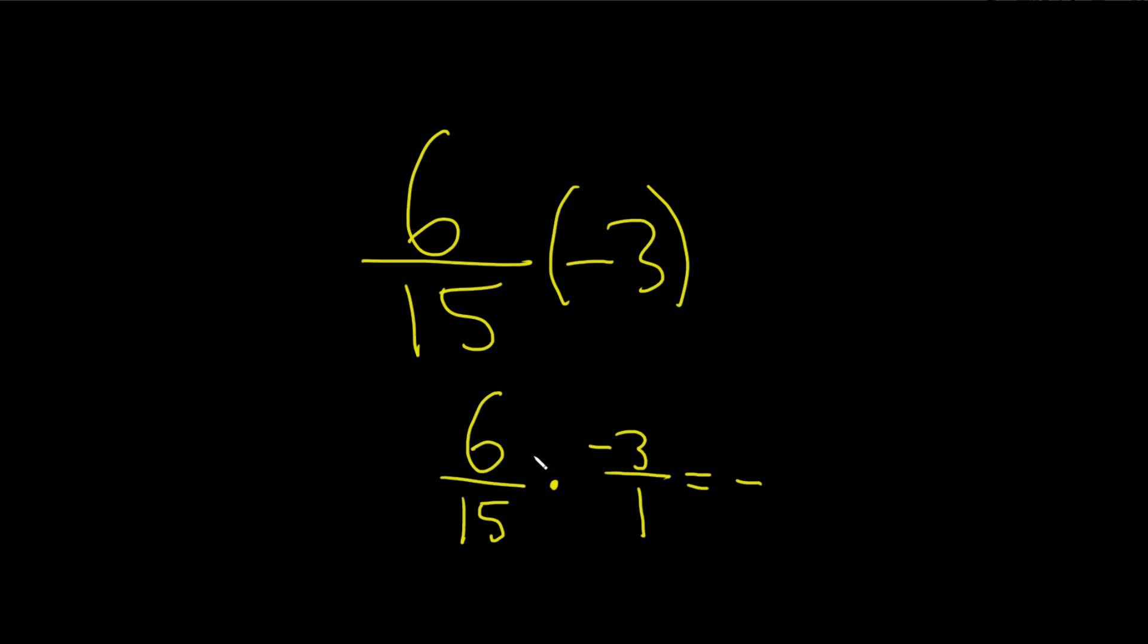And now we can cancel. Remember that numbers on the top can cancel with numbers on the bottom. So we can reduce the 6 and the 15 or we can reduce the 3 and the 15. Let's do the 3 and the 15, that should be good enough.